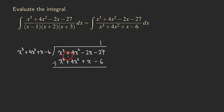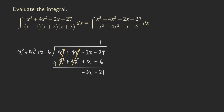Same thing for the 4x squared — both are positive 4x squared, so when you subtract them they cancel. Then we have negative 2x minus x, so that's negative 3x. The next one is negative 27 minus negative 6, and there are double negative signs, so you're actually adding 6, giving negative 21. Okay, so far so good.